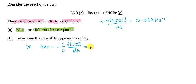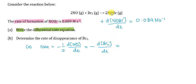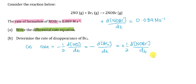For 1 mole of Br2, the reactant will decrease with time, so we put a negative sign. Since it is 1 mole, it is 1/1, so you don't need to write down the 1/1 — just negative d[Br2]/dt. For NOBr as our product, the product will increase with time, so we use a positive sign. Since we have 2 moles of NOBr, it is 1/2 times d[NOBr]/dt.